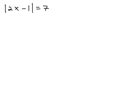As before, once the absolute value is completely alone, there are two possible results that could come out of this absolute value that would give us the 7.